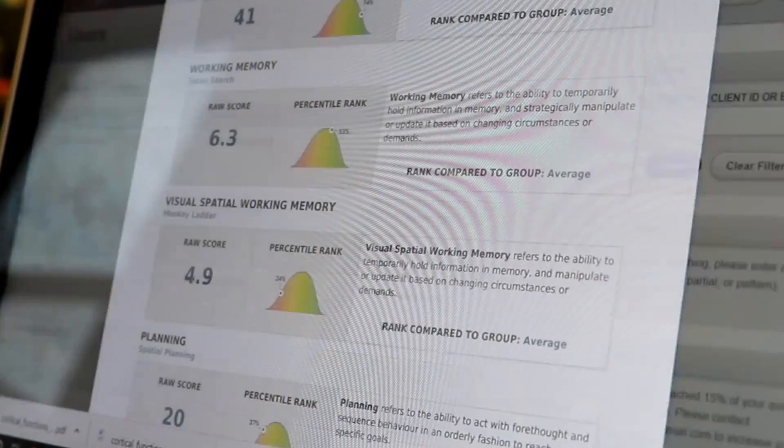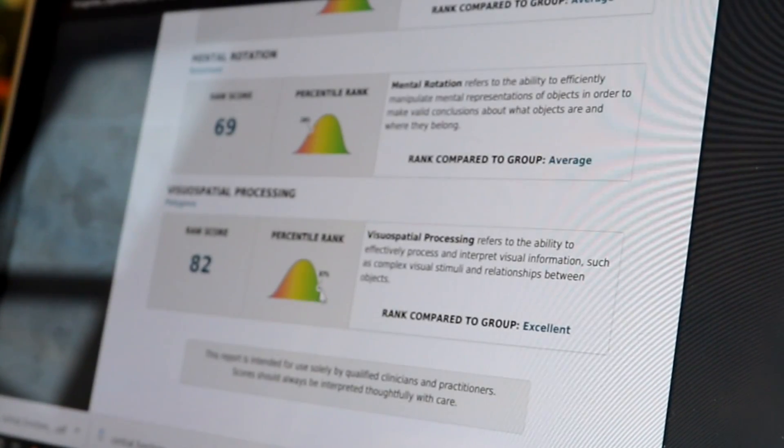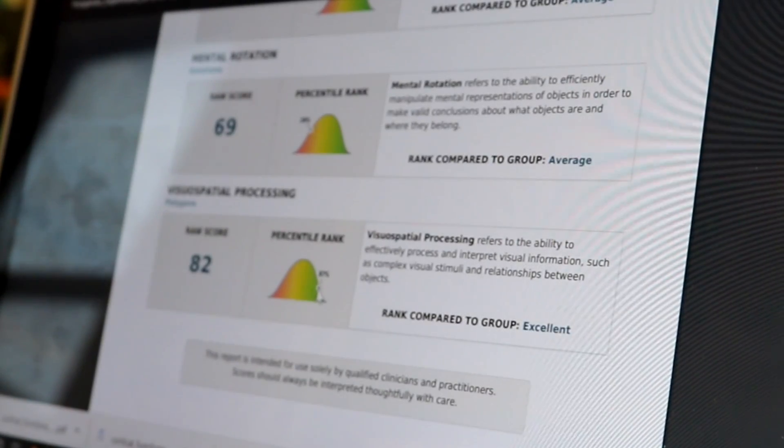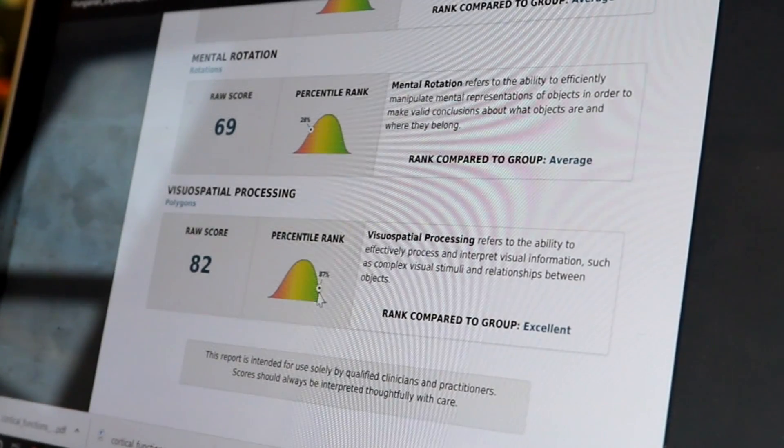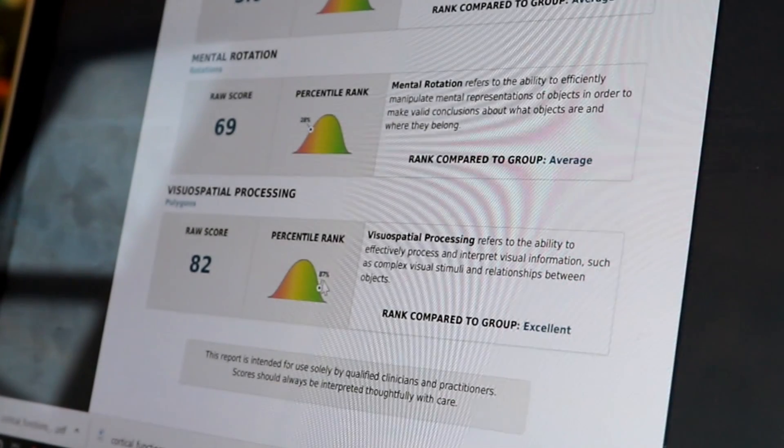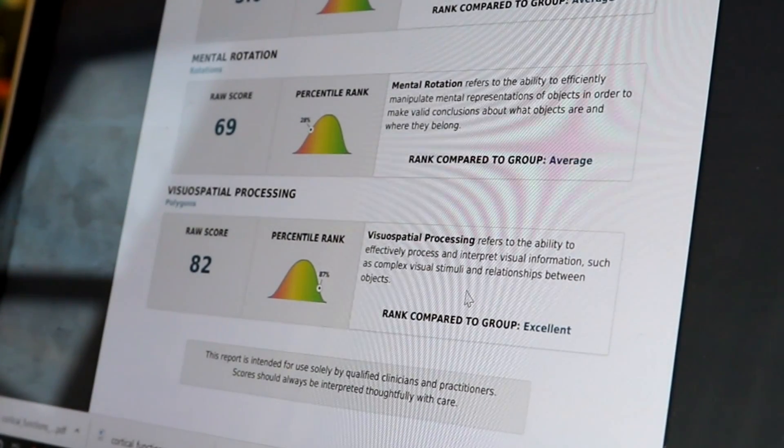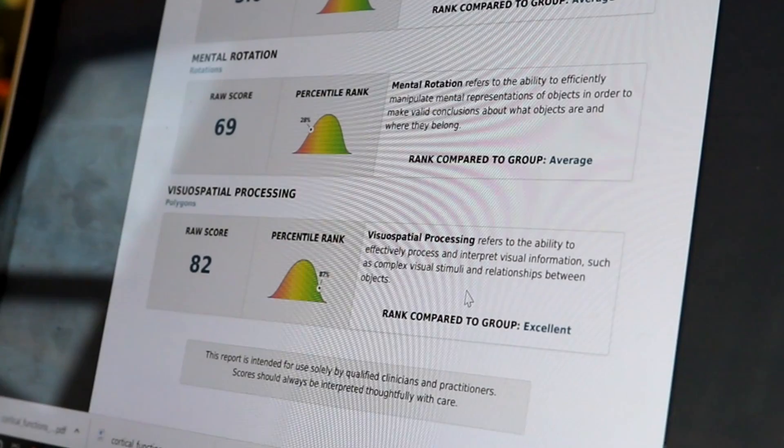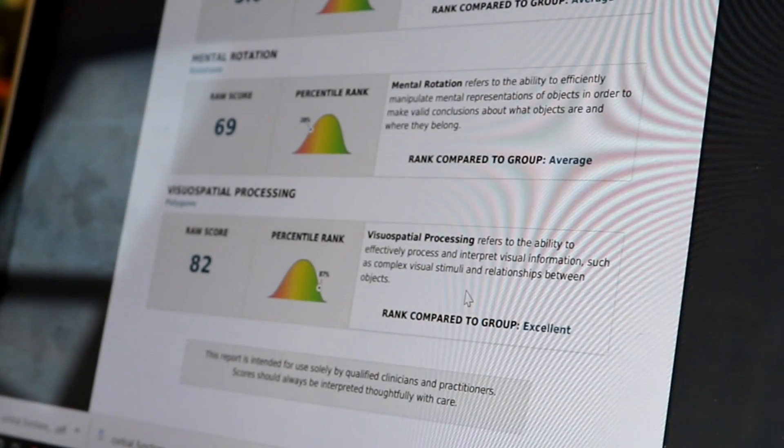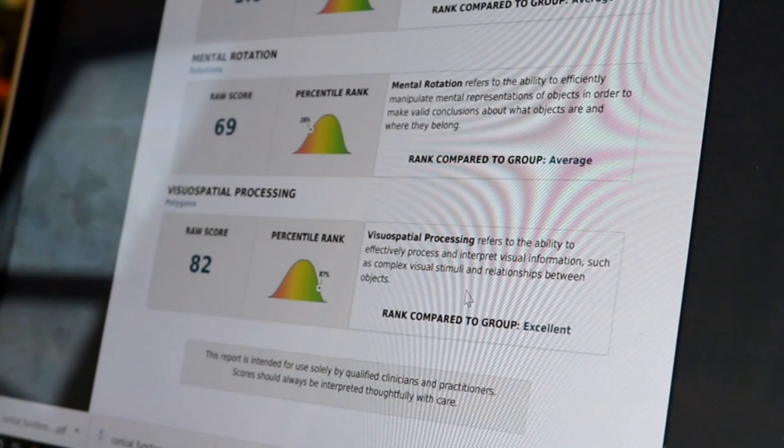And it's consistent also if you look at your results here - your visual spatial processing is in the 87th percentile. It's quite high. So your ability to process visual information, not even just perceive it but to manipulate and understand it in more complex ways and how it relates to each other, it's very high.